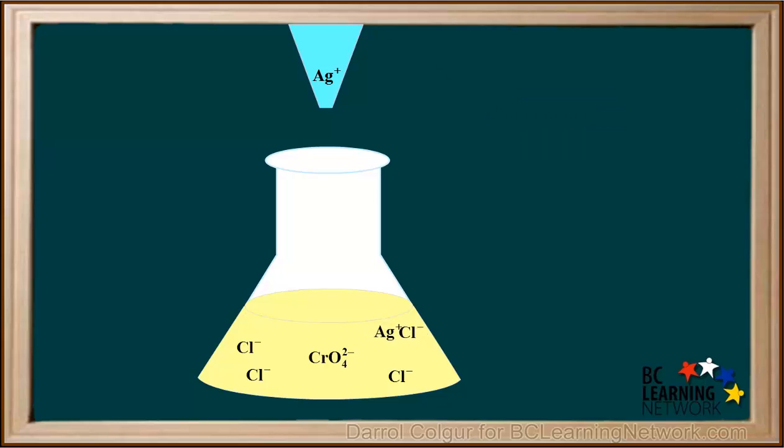This forms the precipitate silver chloride. Because silver chloride is white, the solution turns to a milky yellow color.